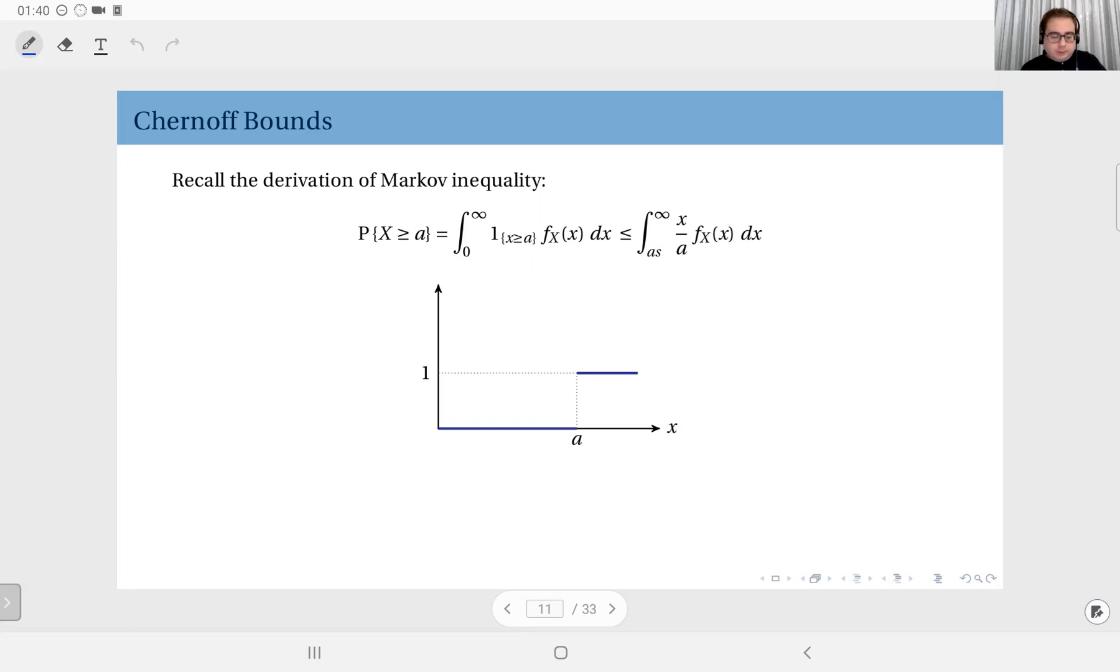Anyway, first of all, we will look at how Markov inequality is derived. Now, we started with this probability and observed that we did it in some slightly different way, but it adds up to the same result. Let's see how this is expressed. The probability of X exceeding A. Here, of course, we are assuming A is a positive number and X is a non-negative random variable.